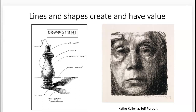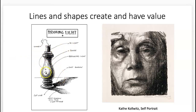Lines and shapes create value and have value. A thicker, bolder, and more darkly drawn line — depending on the medium — has greater value, like in this Käthe Kollwitz charcoal self-portrait. Thinner, lighter lines have less value; they're not drawn as hard. The highlight or reflected light — the reflected light is the back part where light bounces around the environment and kind of goes into the shade side.